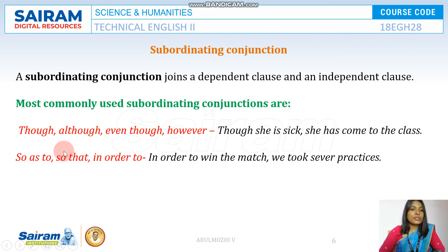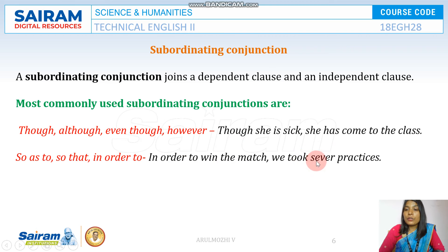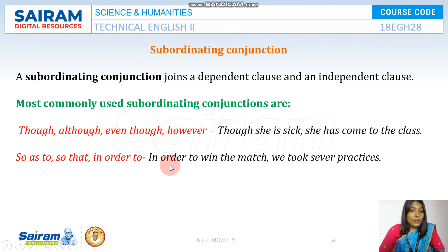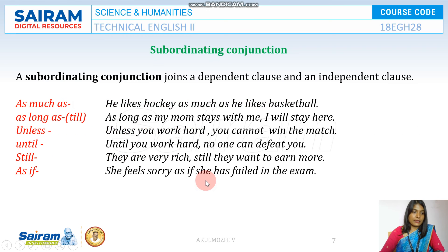"So as to", "so that", and "in order to" connect an action and a goal. For example, "In order to win the match, we took several practices." Or: "We took several practices so that we win the match" or "So as to win the match, we took several practices."